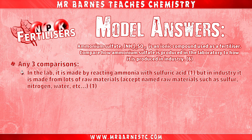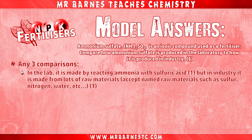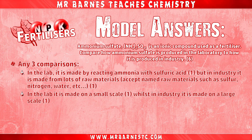The second mark is the comparison: in industry it's made from lots of raw materials — and they usually accept named raw materials such as sulfur, nitrogen, water, etc. The third and fourth marks are on scale: in the lab it's made on a small scale, and in industry it's on a large scale — that comparison earns you both marks.